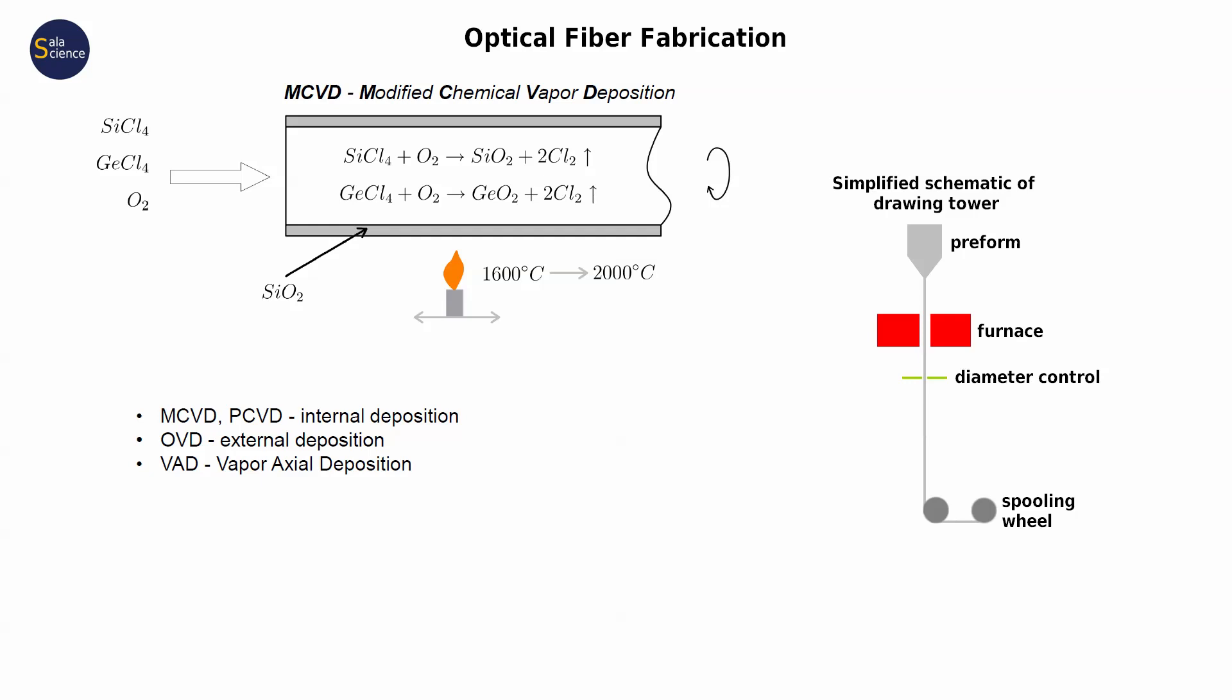There are also other methods of making a preform. Core can be doped with various materials and the fiber is also coated with some additional protecting layer. So what I am showing you is just a simplified concept of how the fibers are made.